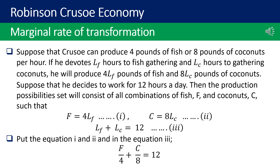Suppose that Crusoe can produce 4 pounds of fish or 8 pounds of coconuts per hour. If he devotes LF hours to fish gathering and LC hours to gathering coconuts, he will produce 4·LF pounds of fish and 8·LC pounds of coconuts. Suppose he decides to work for 12 hours a day. Then the production possibilities set consists of all combinations such that F = 4·LF (equation 1), C = 8·LC (equation 2), and LF + LC = 12 (equation 3). Substituting equations 1 and 2 into equation 3 gives: F/4 + C/8 = 12.